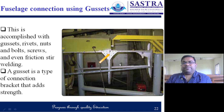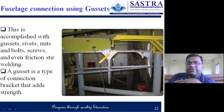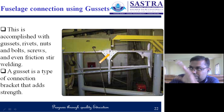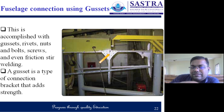The fuselage connection uses gussets. A gusset is a type of joint or bracket that adds strength. Gussets use rivets, bolts, nuts, screws, and even friction stir welding. This kind of connection provides strength to the fuselage — longerons and formers are connected together using gussets.